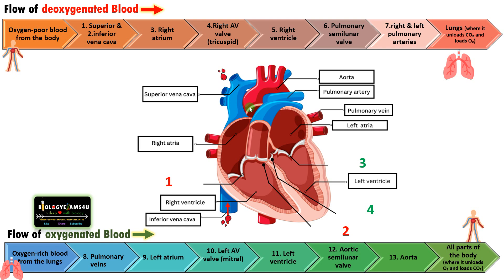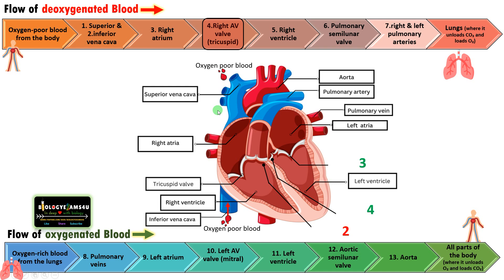Hi friends, let us understand the four valves of the heart and their functions. The first one is the right AV valve or tricuspid valve. Let us see how blood flows through the heart to understand the functions of these valves. Oxygen-poor blood from the superior vena cava and inferior vena cava reaches the right atria of the heart. From there, the blood flows into the right ventricle.